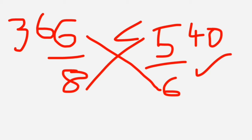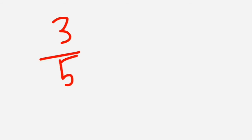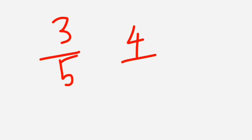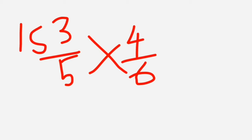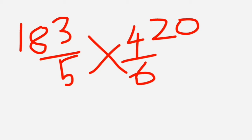Let's take one more example to get a clear idea. Take 3/5 and 4/6. Cross multiply: 3 into 6 is 18, and 5 into 4 is 20. Since 18 is less than 20, four-sixths is greater than three-fifths. Hope you all understand this simple trick.